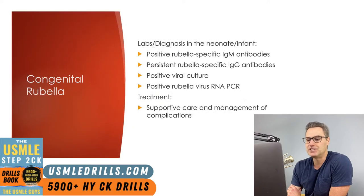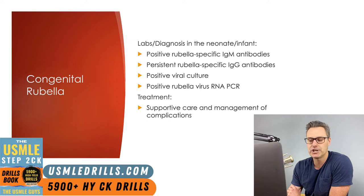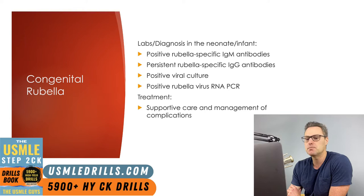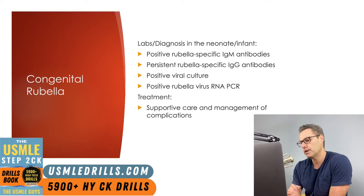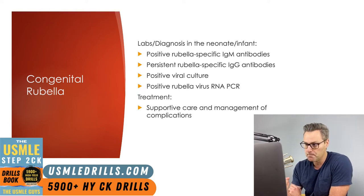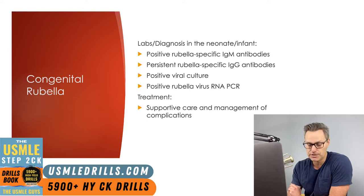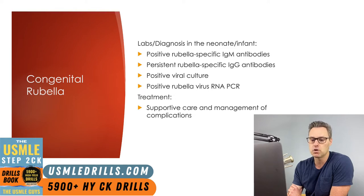Labs that can diagnose congenital rubella include the presence of positive rubella-specific IgM antibodies, persistent rubella-specific IgG antibodies — meaning the antibodies are not decreasing in concentration or are higher than would be anticipated from passive transfer of maternal antibody — or positive viral culture and positive rubella virus RNA PCR. Treatment is with supportive care and management of individual complications.